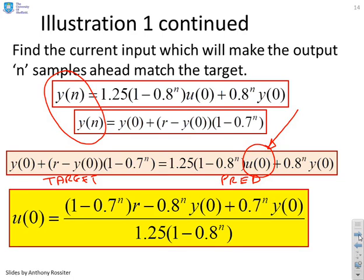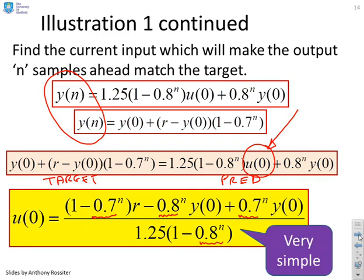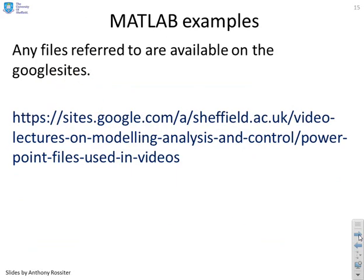Now that algebra is still relatively simple. You see this 0.7 to the power n, that's your target dynamic. This 0.8 to the n, that's your process dynamic. And you'll see those two terms come in in two places. But bottom line is it's a very simple control law. And I can write it down explicitly. And that's the nice thing. There's no complicated loops, no iterations, no messing about. I can just write it down. There's the answer.